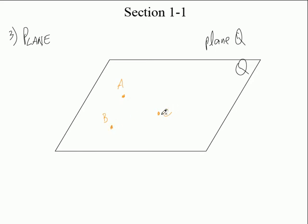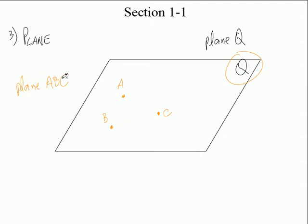Here are three points not on the same line, and that forms this plane. That's another way to name the plane. You know how on the line we used a lowercase letter — that was one way — or we could use two points on the line. Same thing with a plane: we could use the capital letter by itself, or we could use three non-collinear points. So I could call this plane ABC. We don't put any line over top of it, just the word 'plane' out in front.